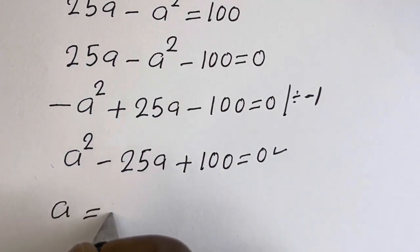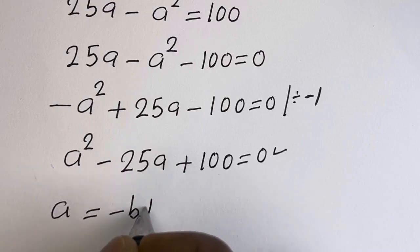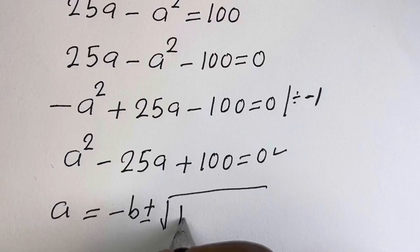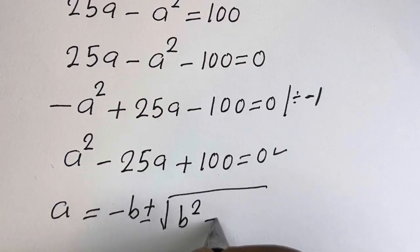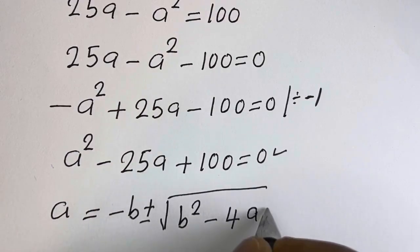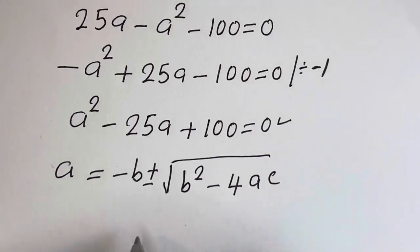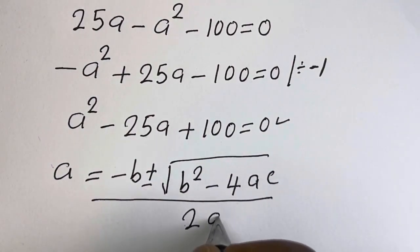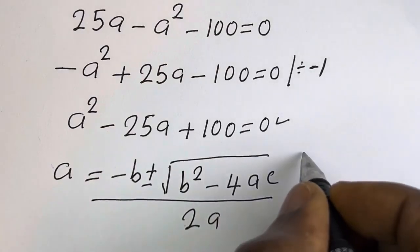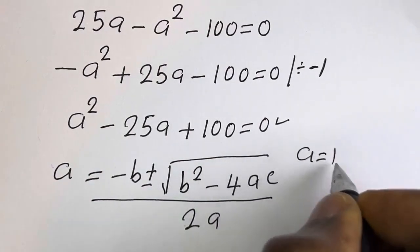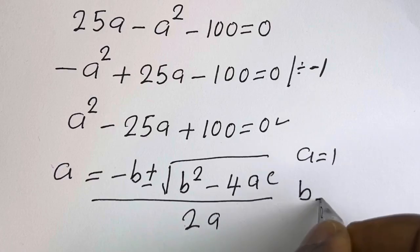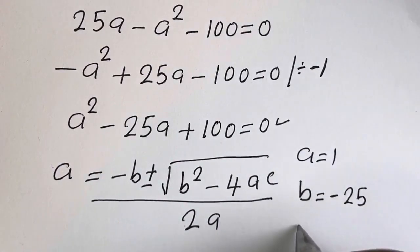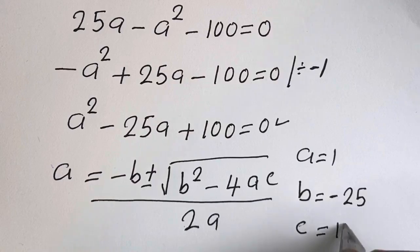A is equal to minus b plus or minus square root of b squared minus 4ac, all over 2a. From this quadratic equation, a is equal to 1, b is equal to minus 25, and c is equal to 100.